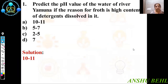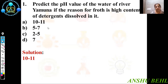First question: Predict the pH value of water of river Yamuna if the reason for froth is high content of detergents dissolved in it. As we know that the pH value of all bases, that is of detergent soaps, should be more than 7. So the answer will be the first option, that is 10 to 11 will be the pH of detergent.